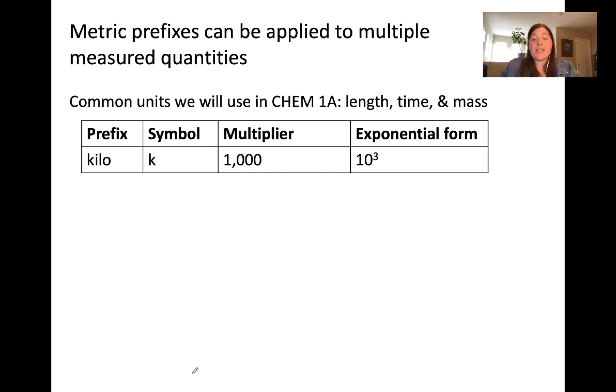For example, the prefix kilo, we can describe length. One kilometer, otherwise known as a kilometer, is equal to a thousand meters. In the exponential form, this is equal to 10 to the third meters.